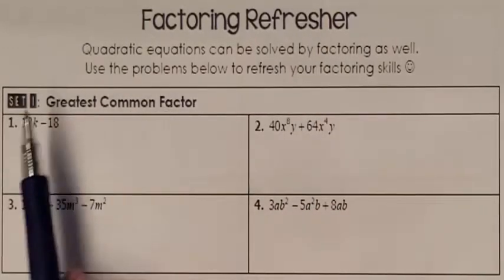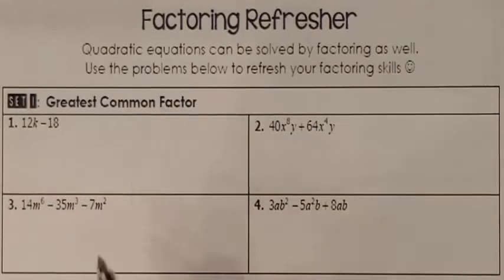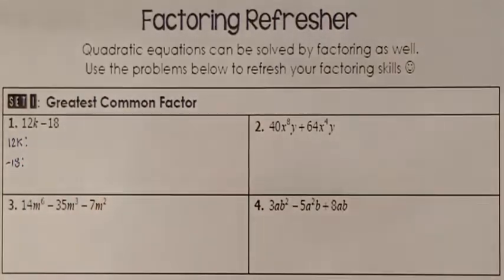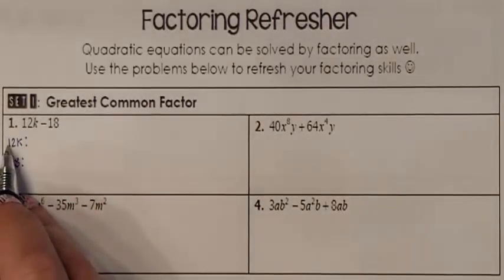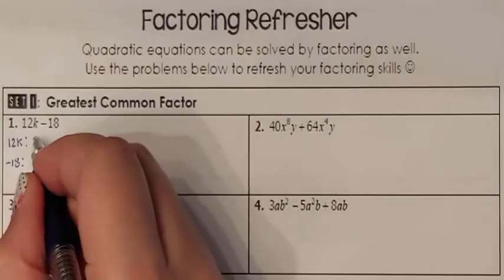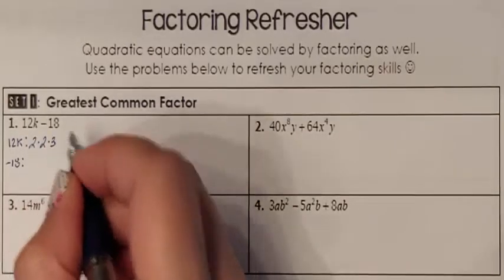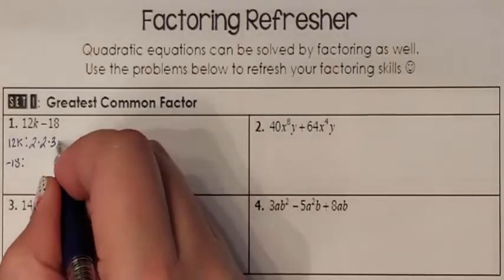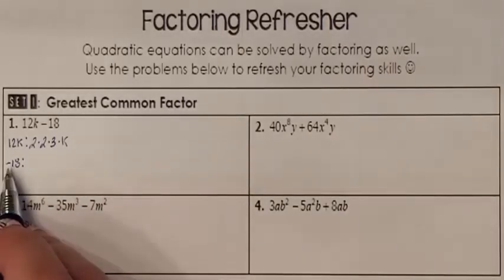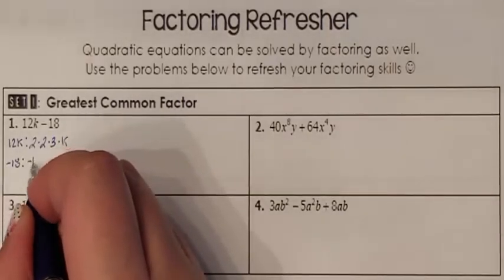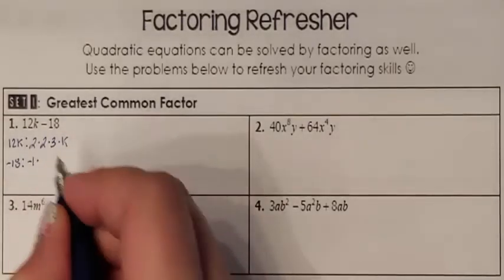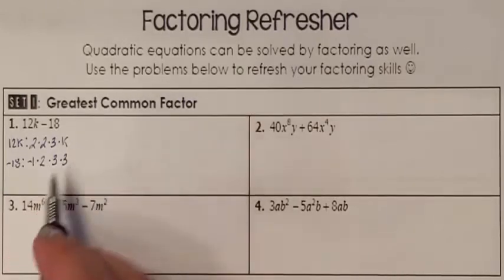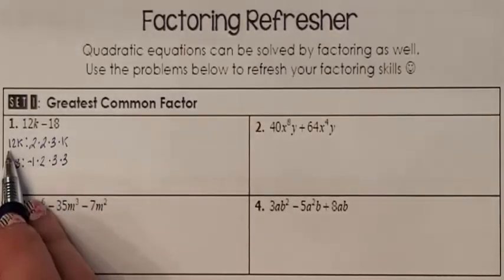Greatest common factor. If I have two terms, then I should look at the prime factorization for both terms. Prime factorizing 12k: the prime factorization of 12 is 2 times 2 times 3, and prime factorizing k is just k. Prime factorizing negative 18: the only number allowed to be negative is 1, so I have negative 1 times 2 times 3 times 3. These are the prime factorizations for each term.